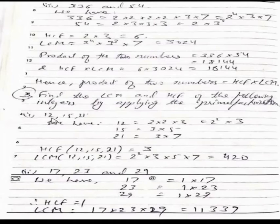For this, numbers are 12, 15 and 21. Prime factors of 12 is 2 into 2 into 3, 15 is 3 into 5, 21 is 3 into 7. HCF of the given numbers is 3 and LCM of the given numbers is 420.